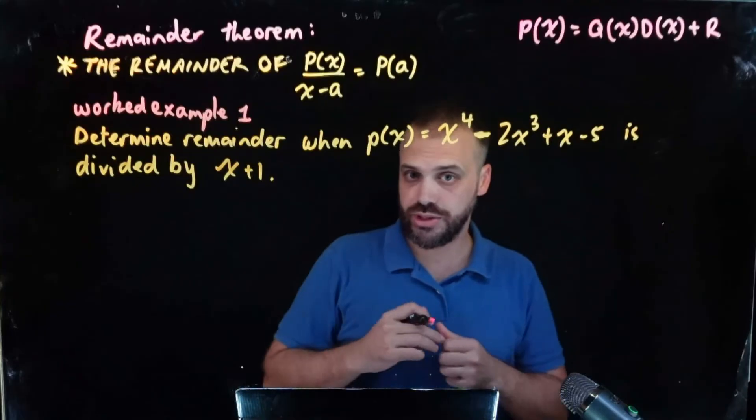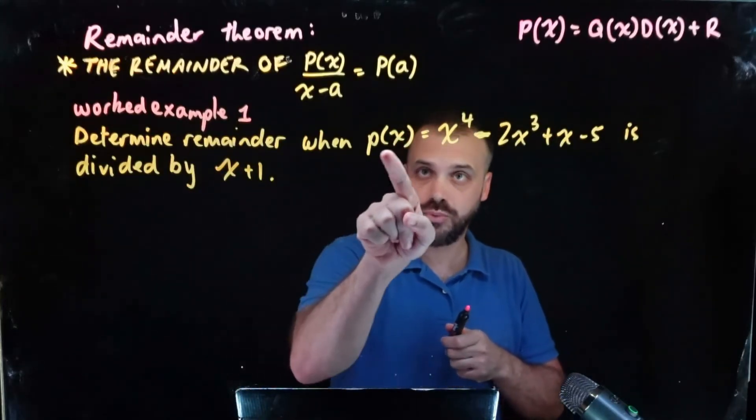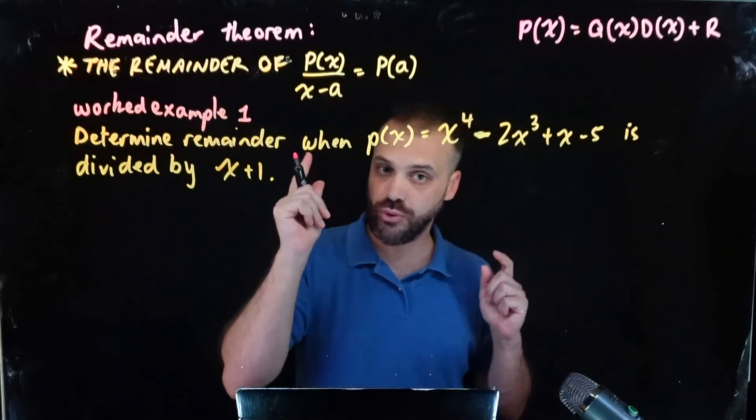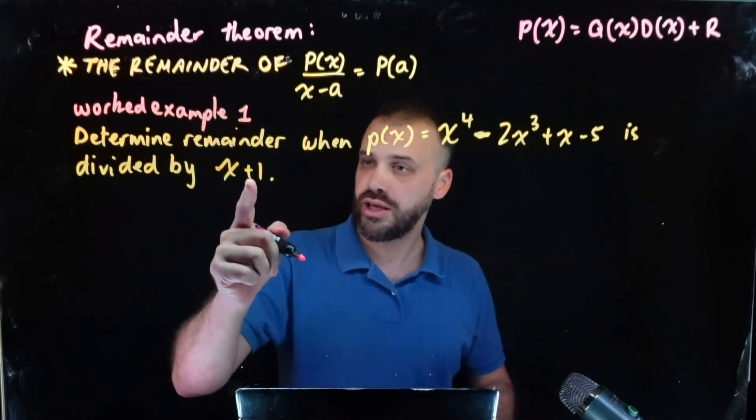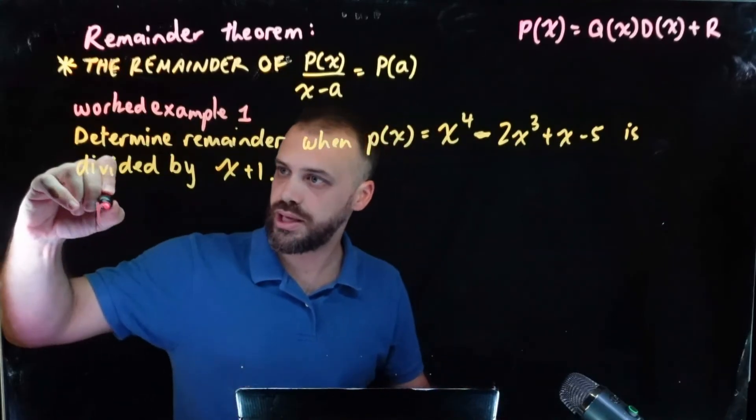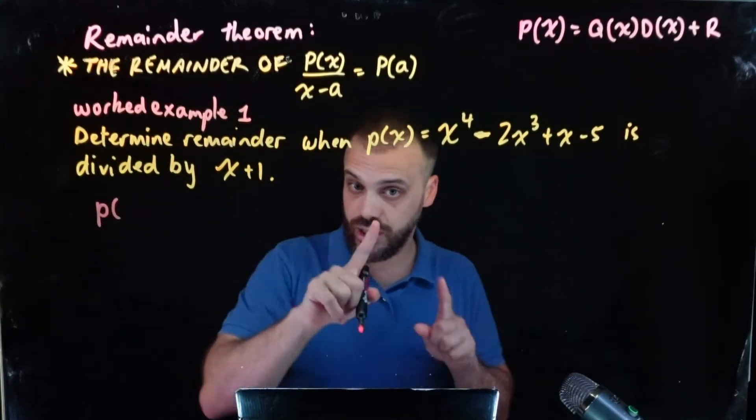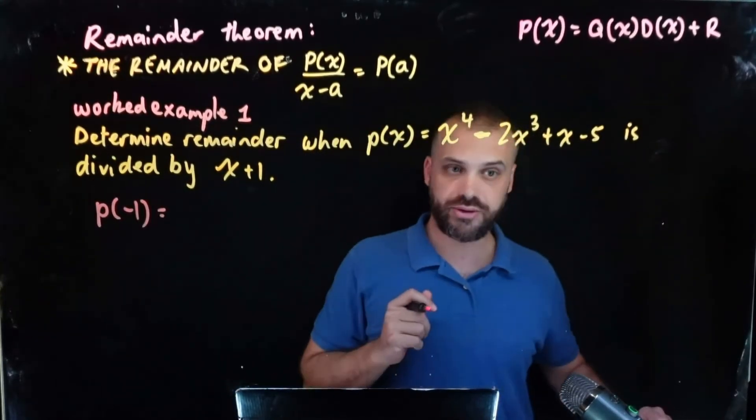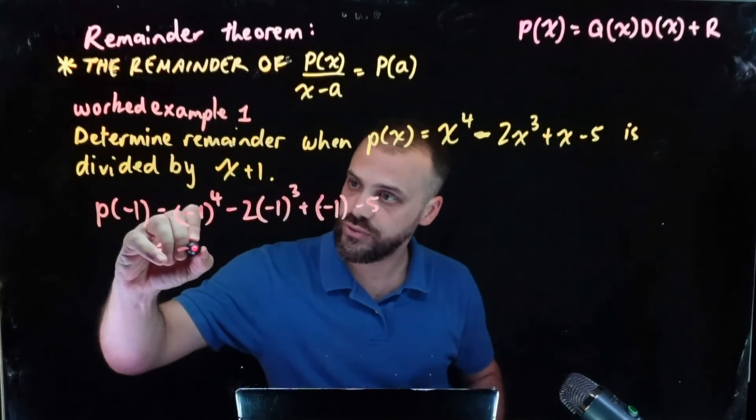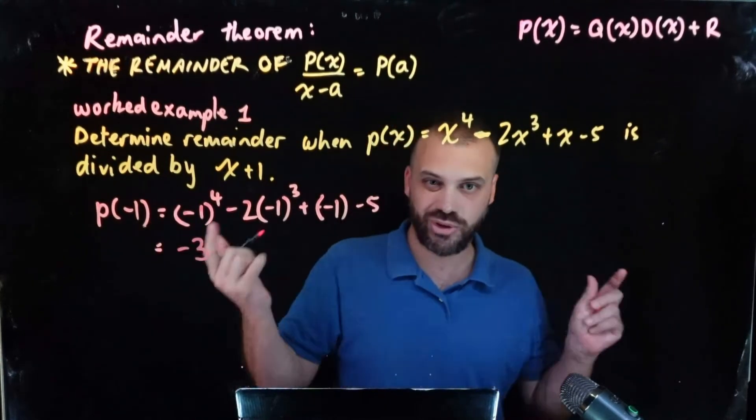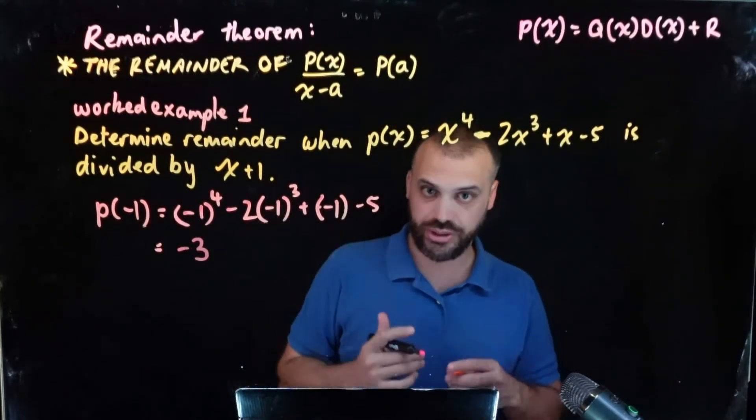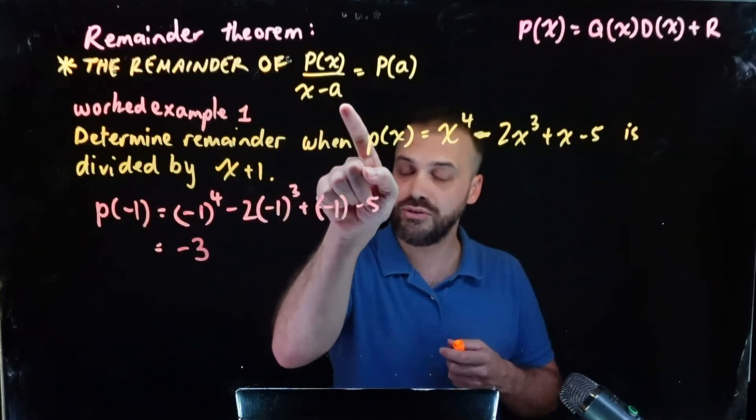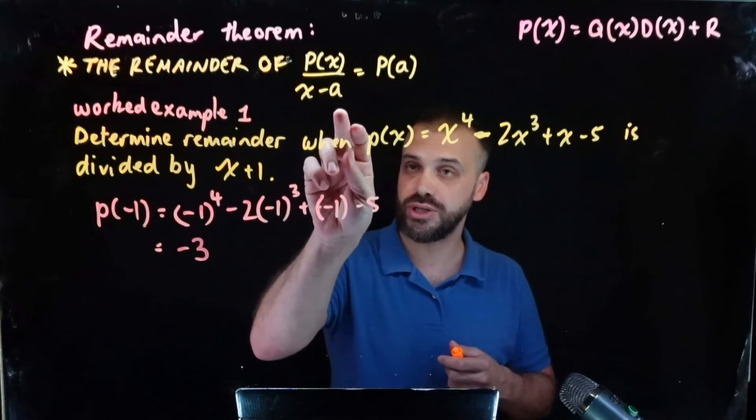So I've been going on for a while, so here's a worked example. Determine the remainder when p(x) is divided by x plus 1. Super straightforward. The remainder theorem tells us that if we sub in p of negative 1, not positive 1, p of negative 1, and we figure that out, we'll get an answer of negative 3. I'm not going to do all that math, but you can see how to do it.